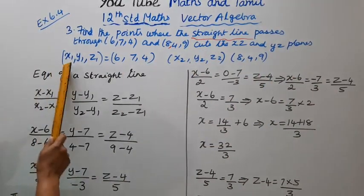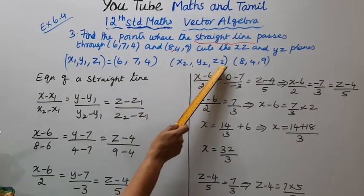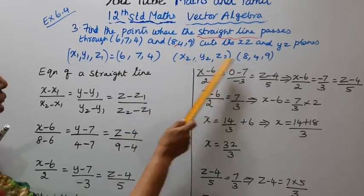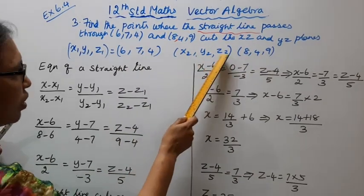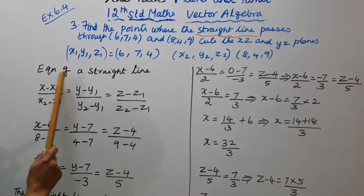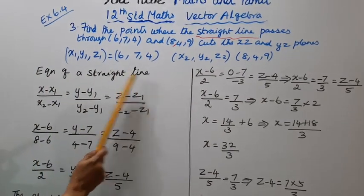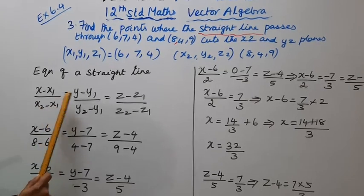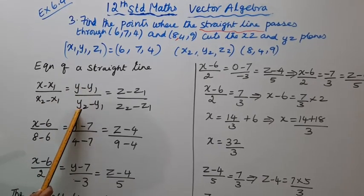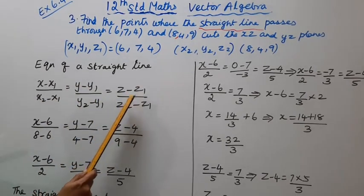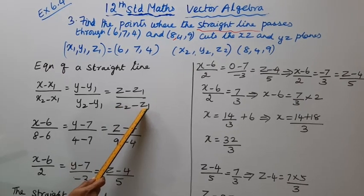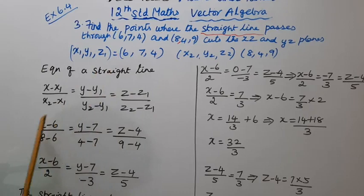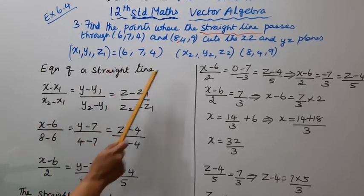Let x1, y1, z1 = (6, 7, 4) and x2, y2, z2 = (8, 4, 9). Using the equation of a straight line formula: x minus x1 divided by x2 minus x1, equal to y minus y1 divided by y2 minus y1, equal to z minus z1 divided by z2 minus z1.